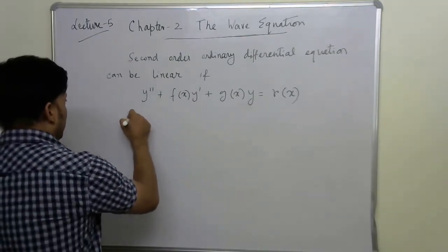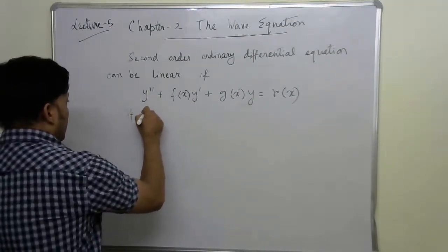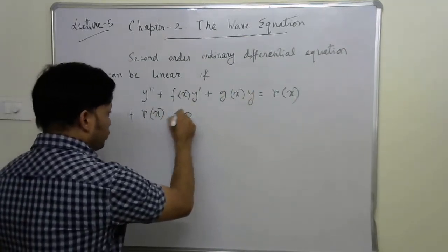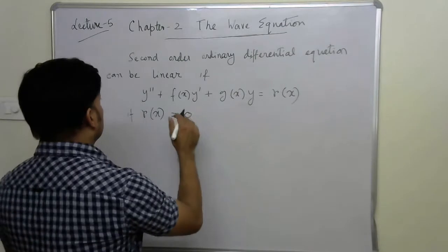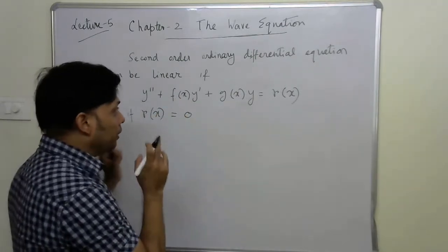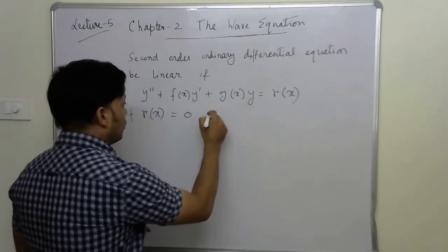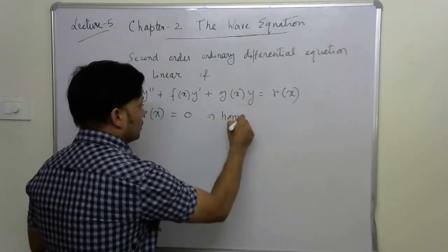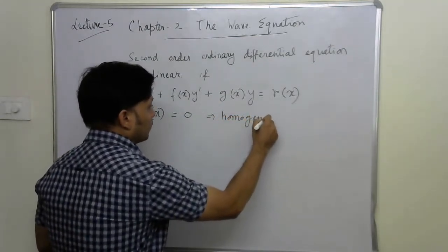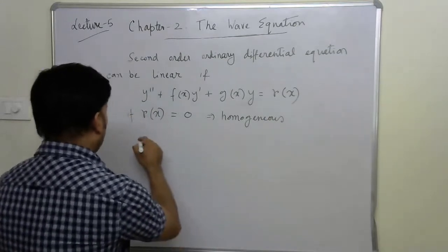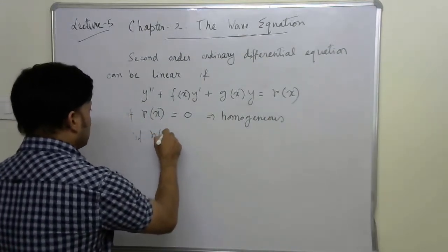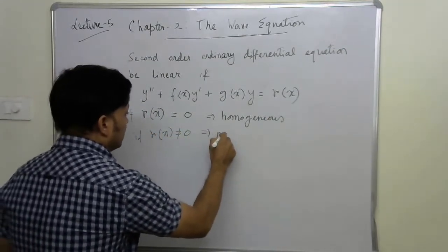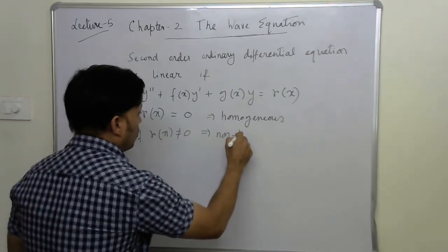If r(x) equals zero, then the second order linear ordinary differential equation is called homogeneous. If r(x) is not equal to zero, then it is called non-homogeneous.